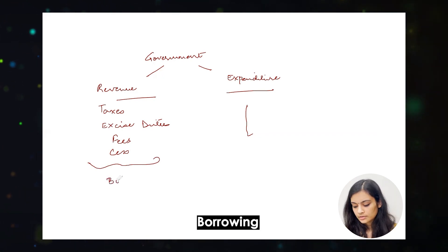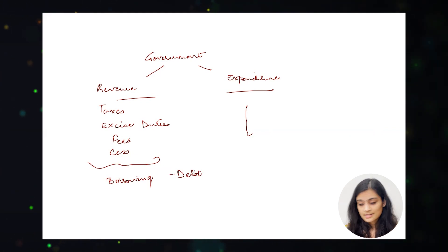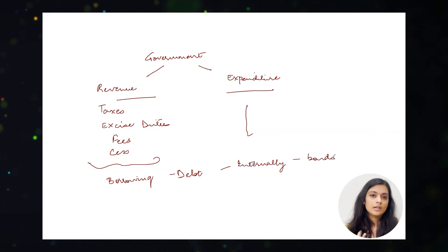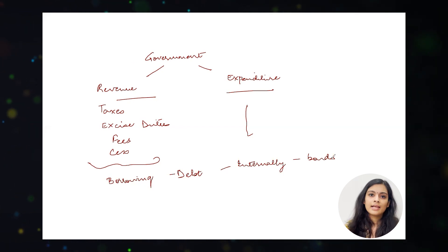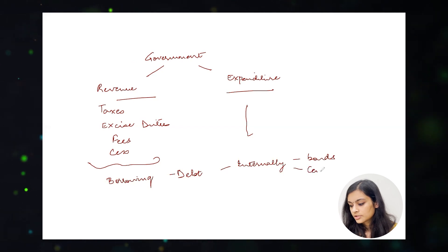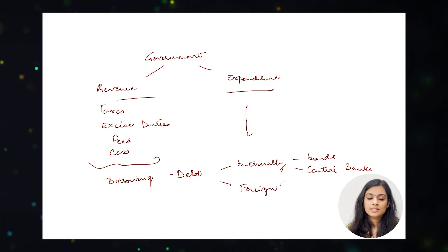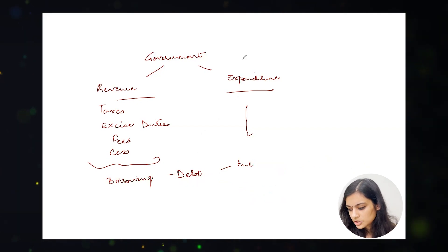There is also another way to finance expenditure, which is borrowing. The government takes on debt to finance different expenditure items. Debt could be internal — through bonds. A bond is basically a piece of paper that the government gives you in return for money, promising to pay you a certain interest rate. For example, the government might say, 'Give me 10,000 rupees and I'll pay you 10 percent every year until the bond expires.' Governments can also borrow from the central bank through bonds, or from foreign governments and institutions such as the IMF.